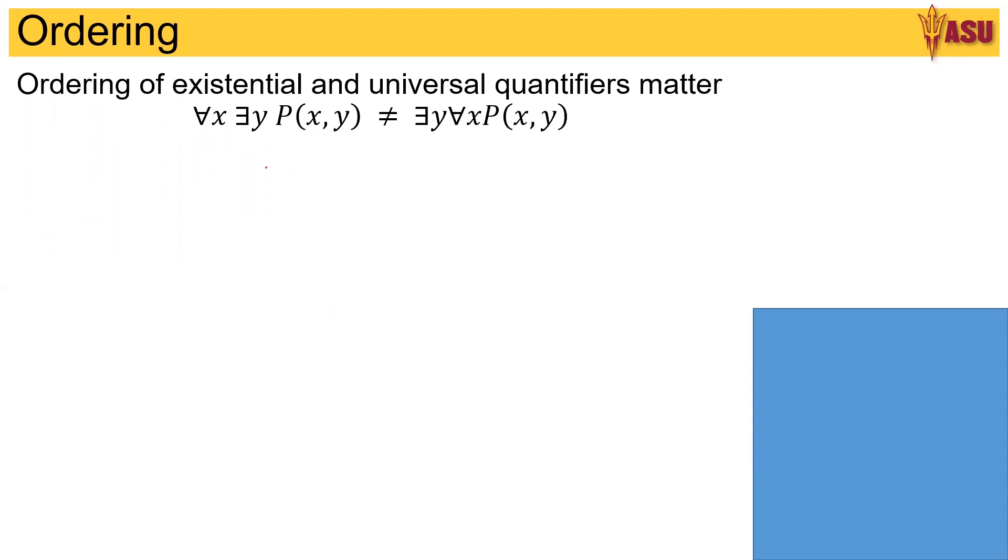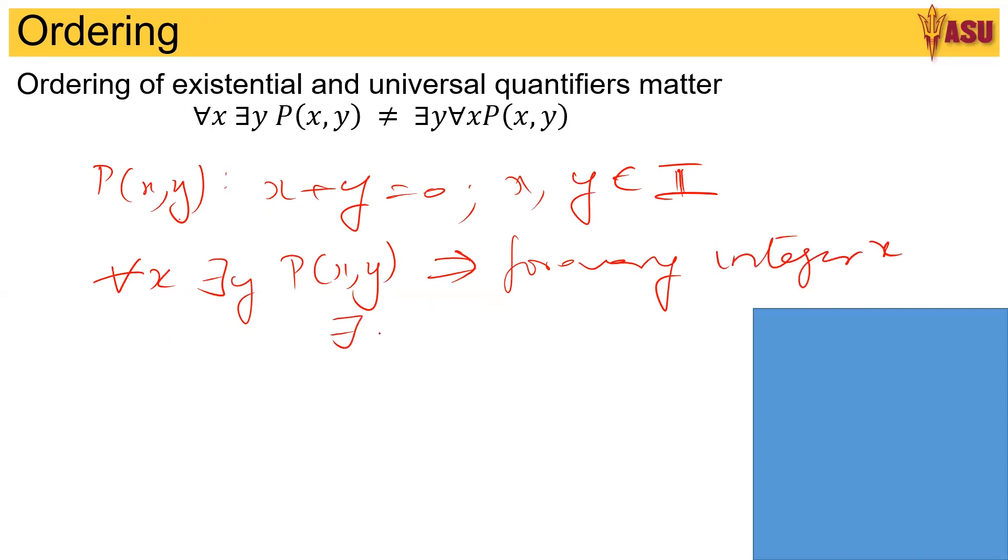So if you have for all x there exists y, P(x,y), that's not the same as there exists y for all x, P(x,y). So let's take a simple example to see this. Let's say P(x,y) is defined by x plus y equals 0 and x, y belong to integers. Now if you see the formula for all x there exists a y, P(x,y), this can be written in English as: for every integer x there exists another integer y such that x plus y is equal to 0.